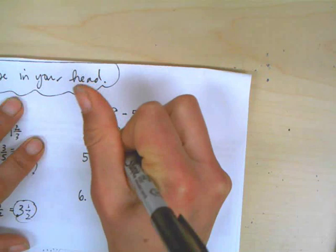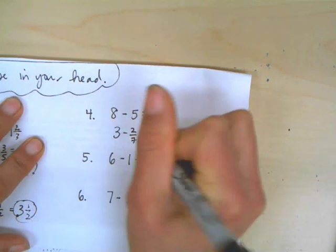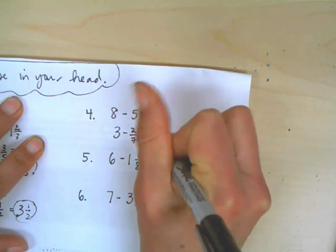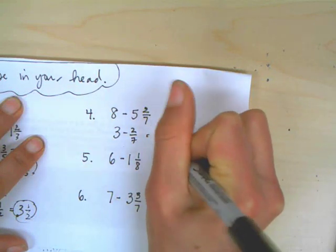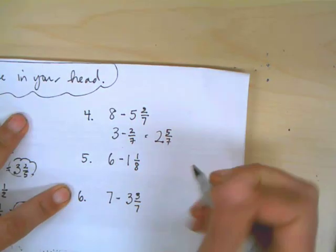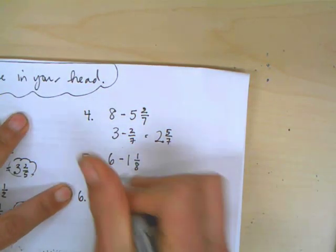So whole numbers first. 8 minus 5 is 3. Then subtract the 2 sevenths. So I know I have less than 3, so I have 2. And 5 sevenths. Once again, I can add those numbers back together and get back to my 3.